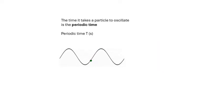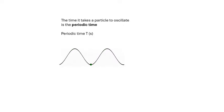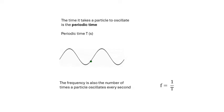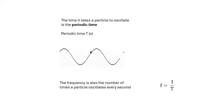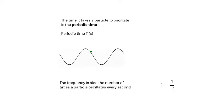The time it takes a particle to oscillate is the periodic time, capital T, measured in seconds — the time for one oscillation. The smaller the periodic time, the bigger the frequency. This gives us the equation: f = 1/T. If the period is big, frequency is low; if the period is small, frequency is high. For example, if T = 0.1 s, then f = 1/0.1 = 10 Hz.